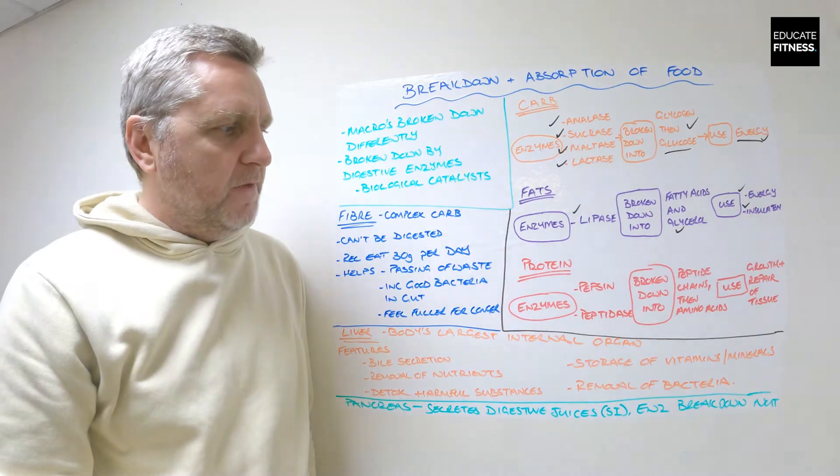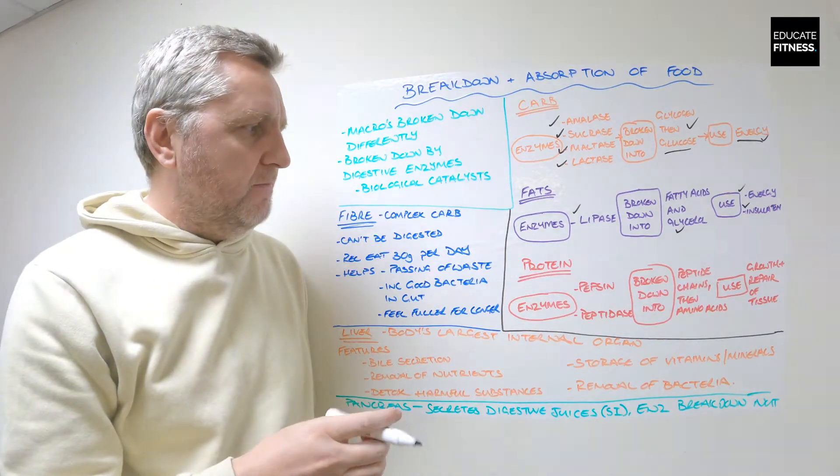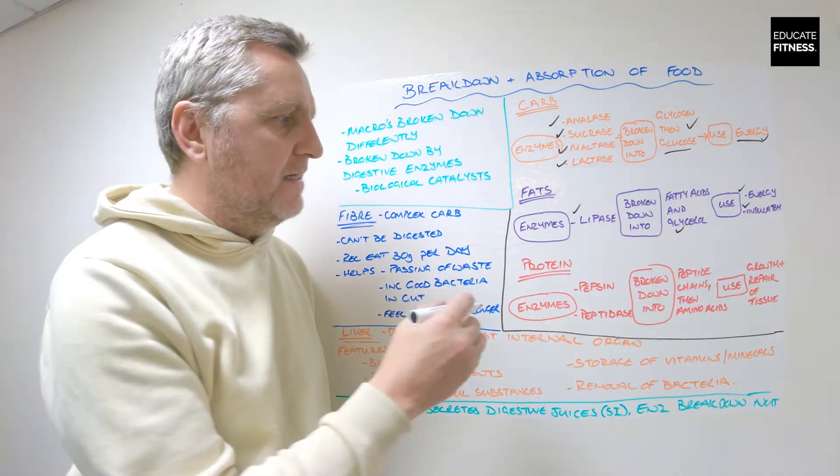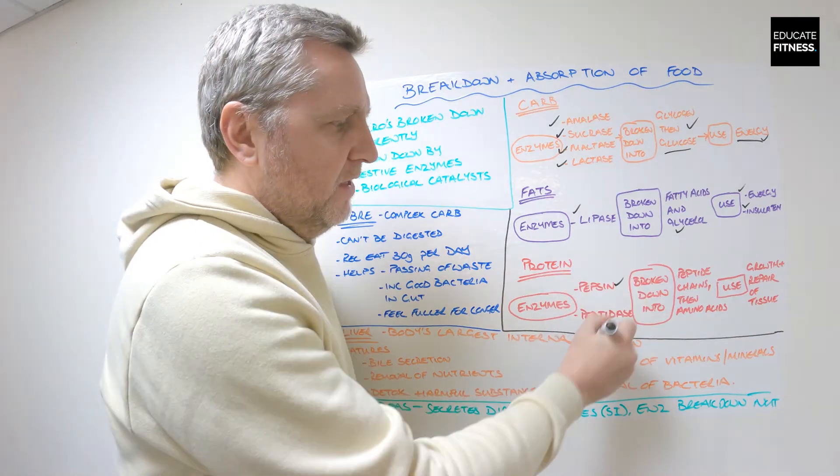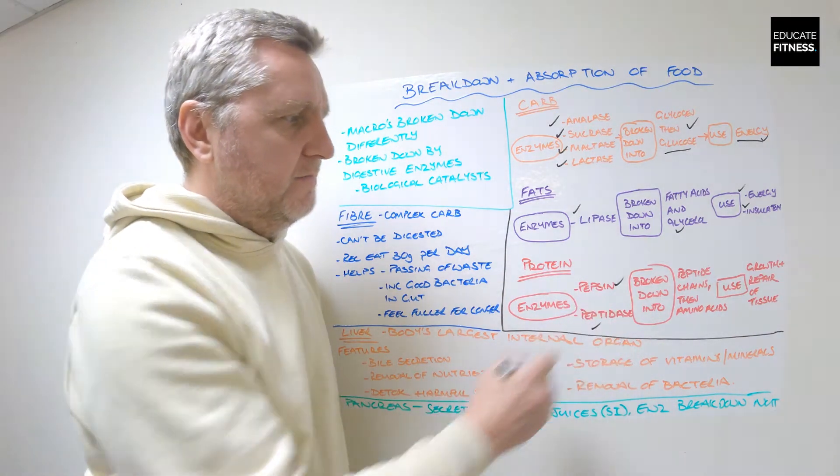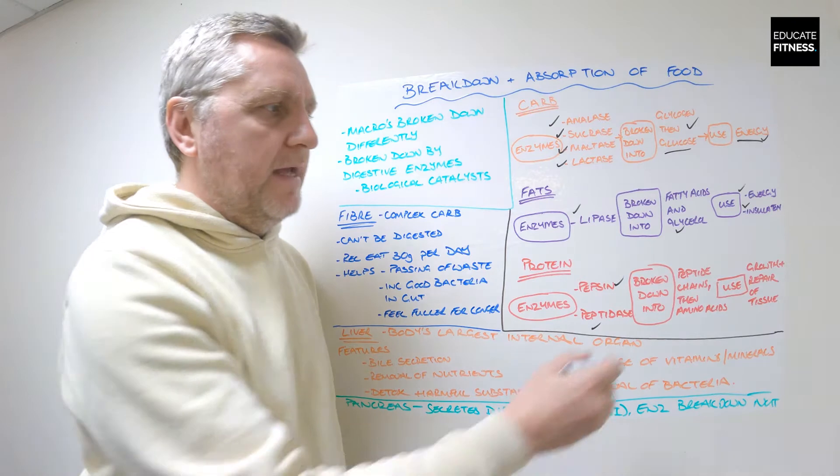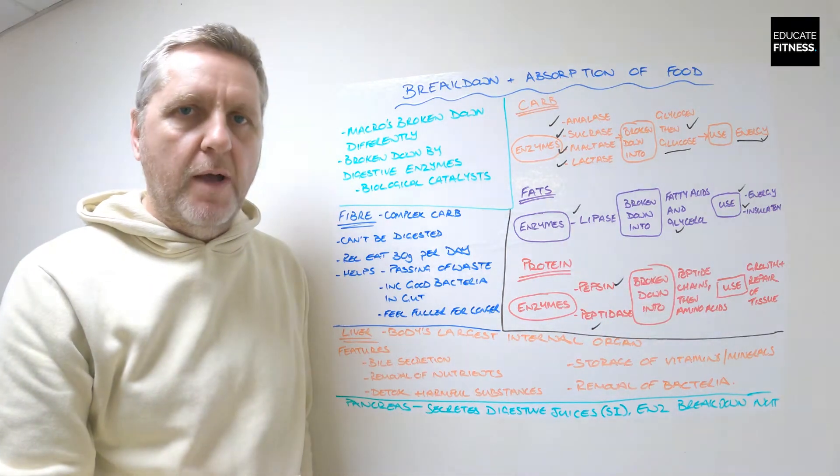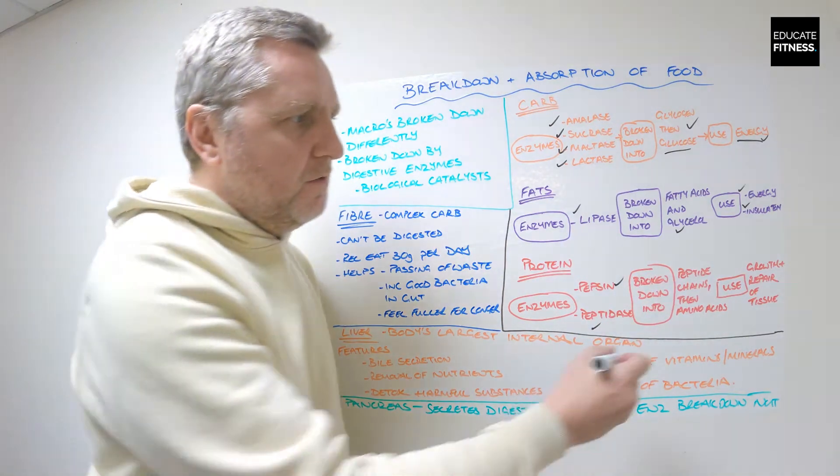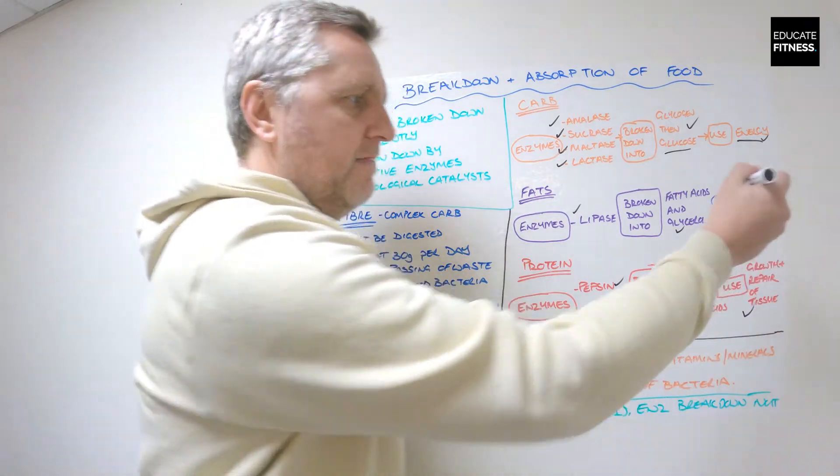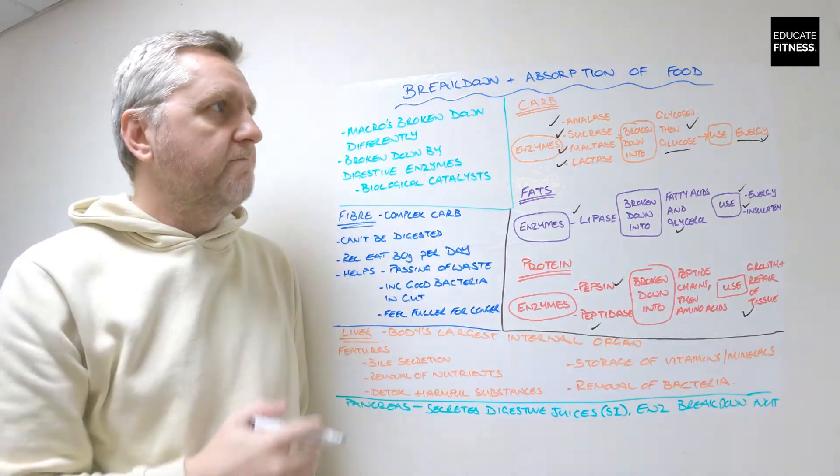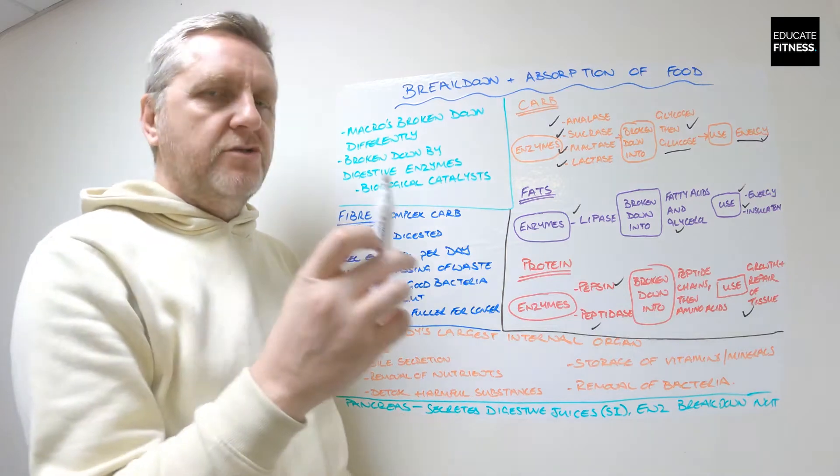Finally, we've got protein. The two types of enzymes that are involved in protein digestion are pepsin and peptidase. These are broken down into peptide chains and then into amino acids, and the use here is the growth and repair of tissue.